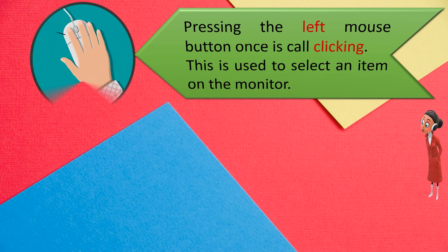Pressing the left mouse button once is called clicking. This is used to select an item on the monitor.